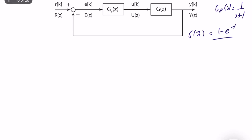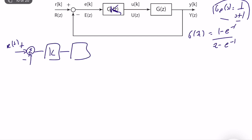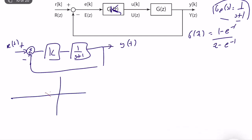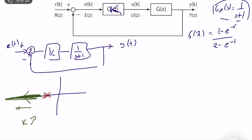We assume that our controller is a simple proportional controller. Before analyzing the digital control system, let's analyze what happens if we have a plant 1/(s+1) — a simple first-order plant — with a proportional controller. So we have r(t) as input, a P-controller, plant 1/(s+1), and output y(t). Let's draw the root locus. We have a single pole, so the root locus is simply a line moving toward negative infinity as K increases.